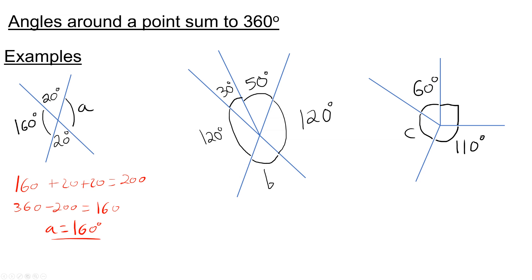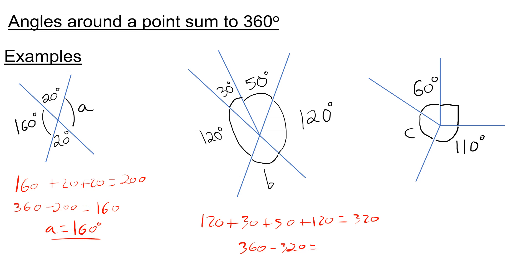In the second question, we add up all of the angles we know: 120 plus 30 plus 50 plus 120. So that's 150, 200, 320. To get B, we need to do 360 take away 320, which is 40 degrees.